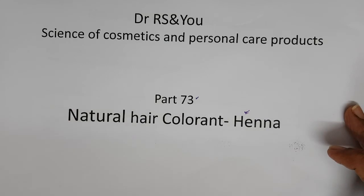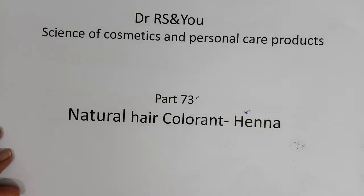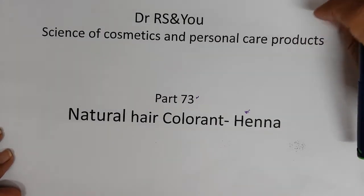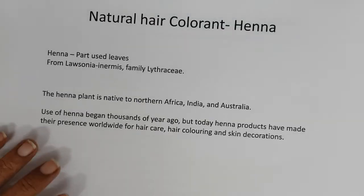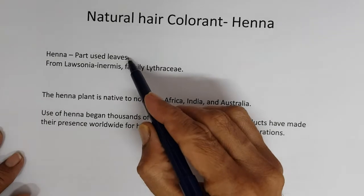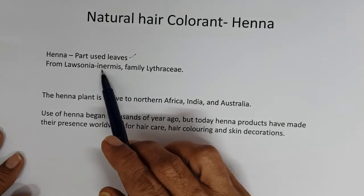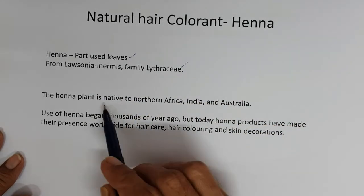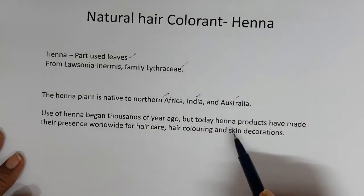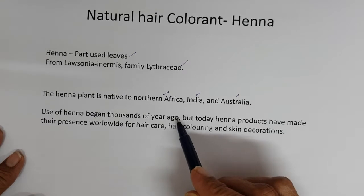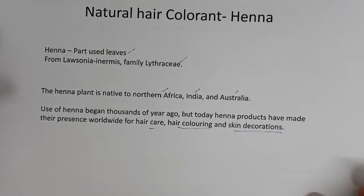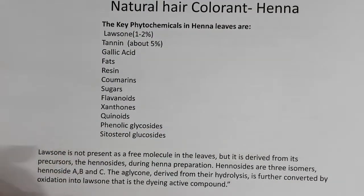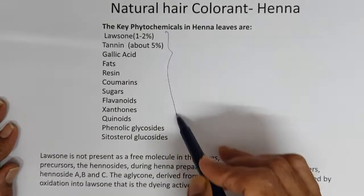We will now see the chemistry of how henna colors: what is the coloring pigment and how it colors the hair, which can be extended to skin and nail. The part used is leaves from Lawsonia inermis, family Lythraceae. The henna plant is native to North Africa, India, and Australia. Use of henna began thousands of years ago, but today henna products have made their presence worldwide for hair care, hair coloring, and skin decorations.